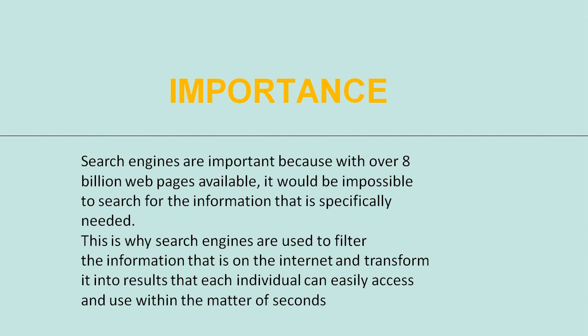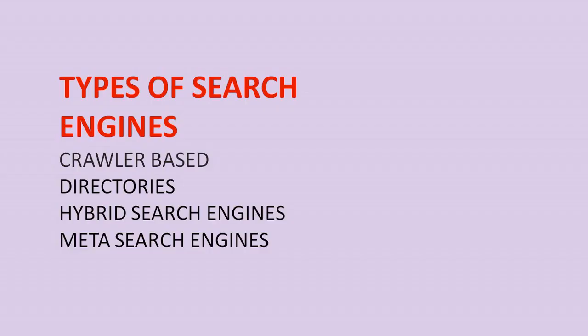There are different types of search engines. The first is crawler-based, the second is directories, the third is hybrid search engines, and the fourth is meta search engines. We will discuss all these types.